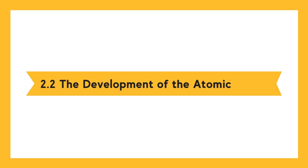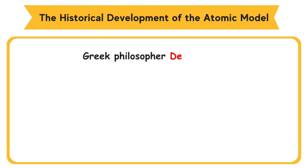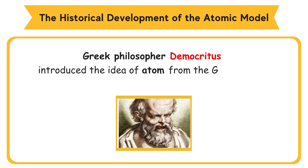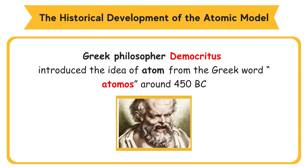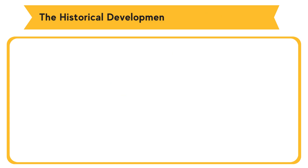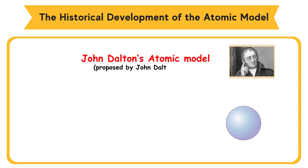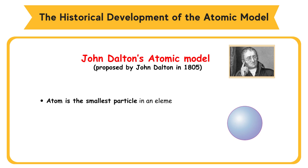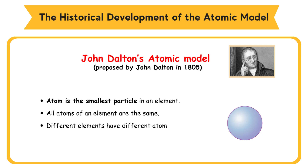2.2 The Development of the Atomic Model. Greek philosopher Democritus introduced the idea of atom from the Greek word 'Atomos' around 450 B.C. John Dalton's atomic model, proposed in 1805: atom is the smallest particle in an element; all atoms of an element are the same; different elements have different atoms; and atoms cannot be divided, created, nor destroyed.